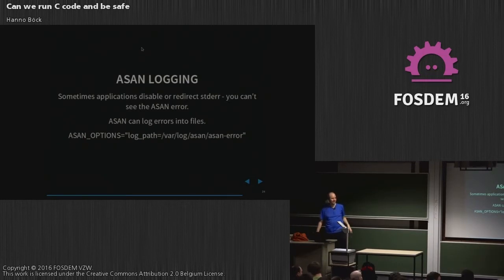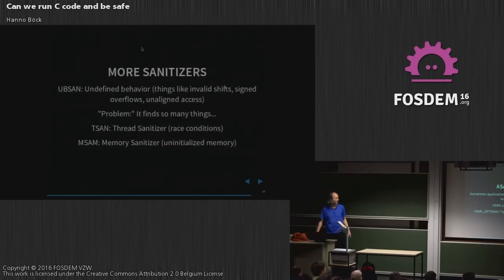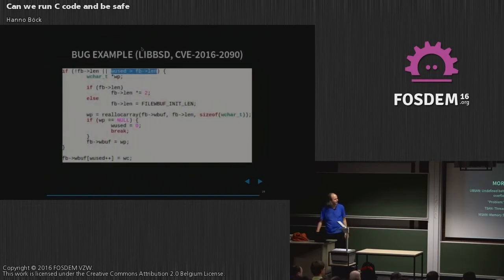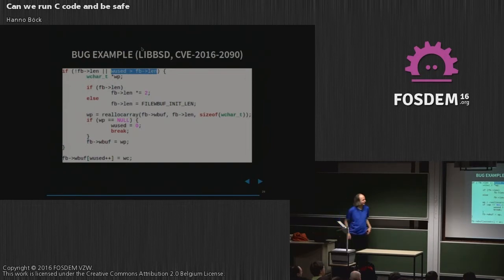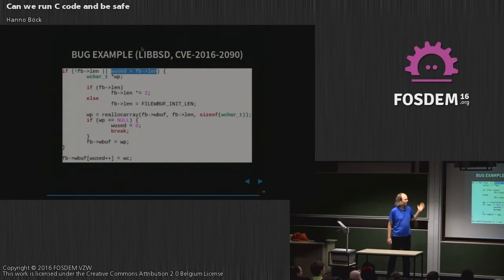AddressSanitizer has a logging feature, which is useful if you have an application that disables standard output and standard error, so you can't see the error message. There are more sanitizer features in the compilers: UndefinedBehaviorSanitizer, which is mostly shifts and unsigned integer overflows; ThreadSanitizer; and MSan, which is for uninitialized memory access. Here's an example for a bug I found about a week ago - a libBSD bug. What's happening is the comparison should be greater-or-equal, because it's checking if we're still in the buffer, and if the size equals the index, we're already out of bounds. A very typical off-by-one bug.